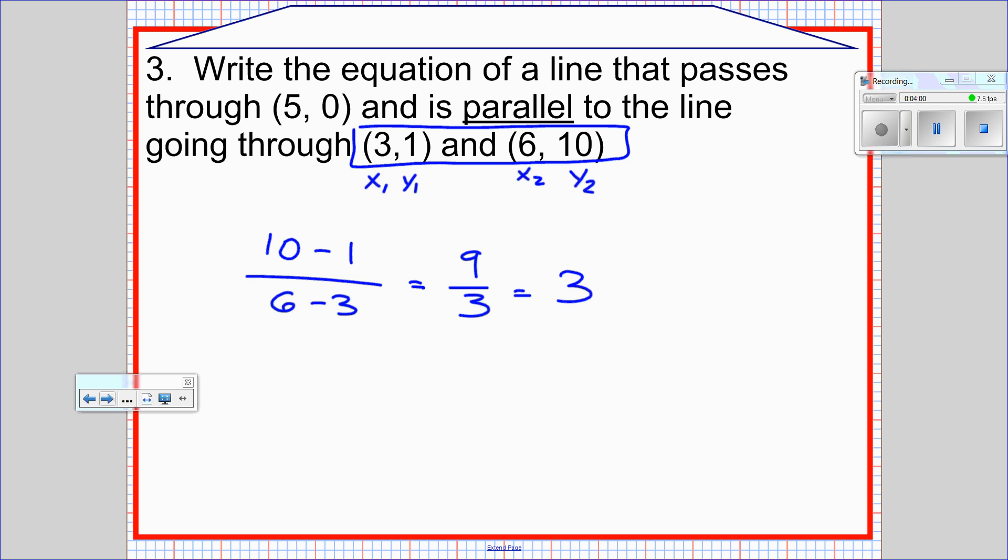That's the only information we need to take from those two points. We're done with them now. Now we're going to move on to the point 5, 0 with a slope of 3. So y equals 3 times x minus 5. And normally we would put our y coordinate there, but we don't have one. So this is the equation of our parallel line.